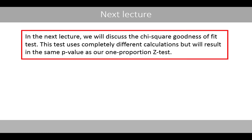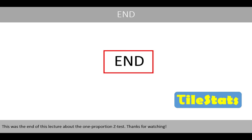In the next lecture, we'll discuss the chi-square goodness-of-fit test. This test uses completely different calculations, but will result in the same p-value as our one-proportion Z-test. This was the end of this lecture about the one-proportion Z-test. Thanks for watching.